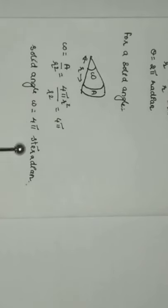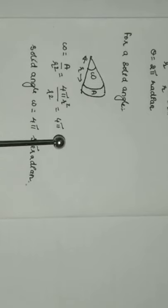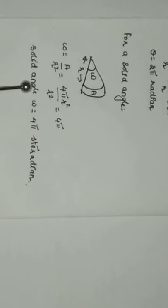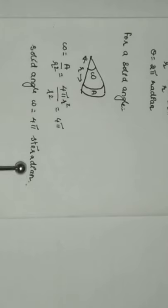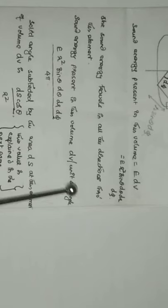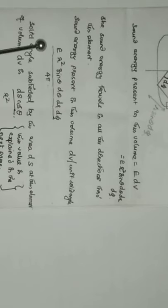Therefore, the solid angle is ω = 4π steradians, while the plane angle is θ = 2π radians. The amount of sound energy present in this volume per unit solid angle is given by e·r²·sinθ·dθ·dr·dφ divided by 4π.